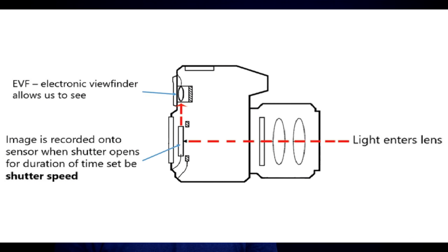In smartphones or mirrorless cameras, we do not have any such mirror, and therefore the object is electronically transferred to the viewfinder. Moving ahead with the shutter — the shutter is just behind the mirror. As soon as we click the shutter button, the mirror flips open, and this is the reason why you cannot see anything from the optical viewfinder as soon as you click the shutter button.